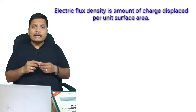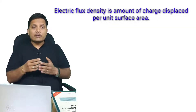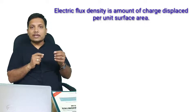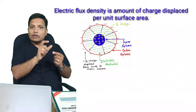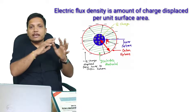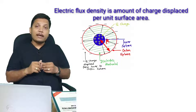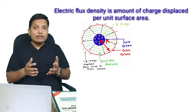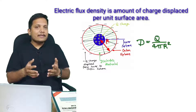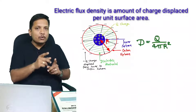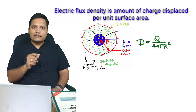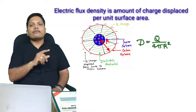Electric flux density is the amount of charge displaced per unit cross-sectional area. For Faraday's experiment, if r is the distance from the center to the outer metallic sphere, the surface area is 4πr². Since q amount of charge is displaced, the electric flux density is q divided by 4πr².